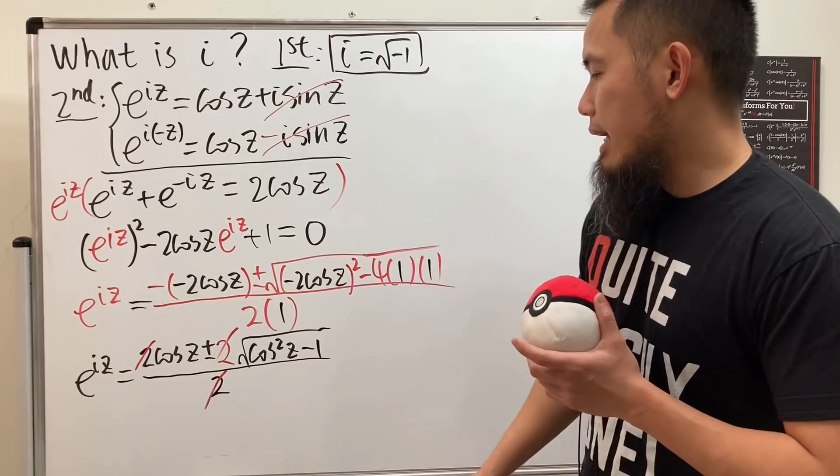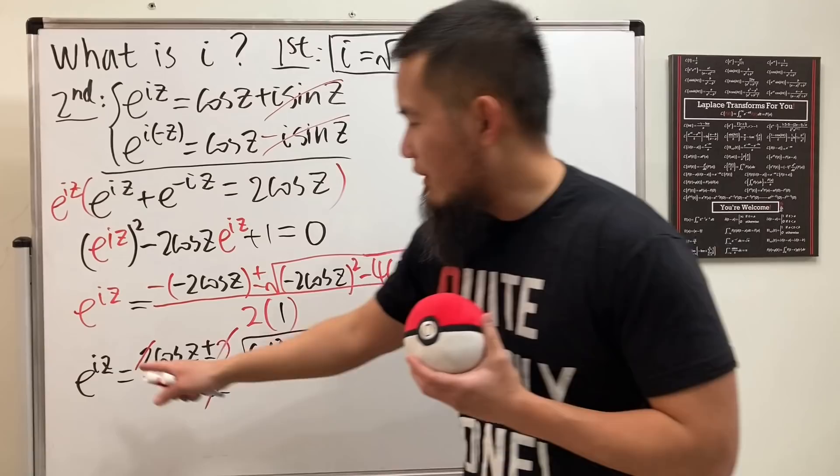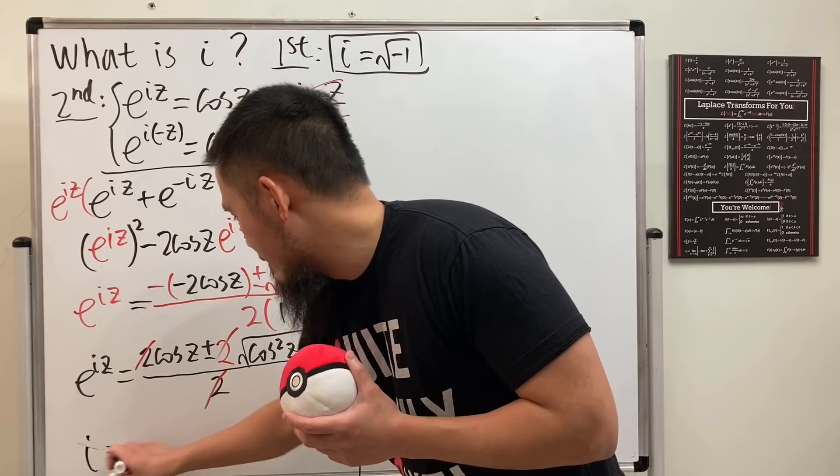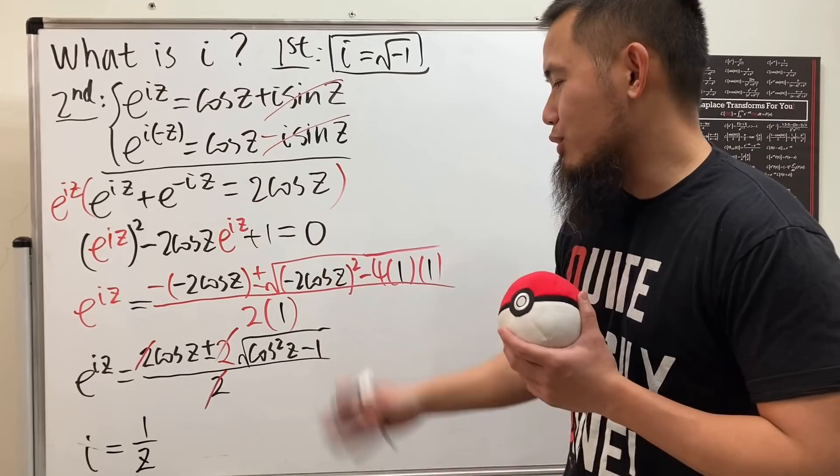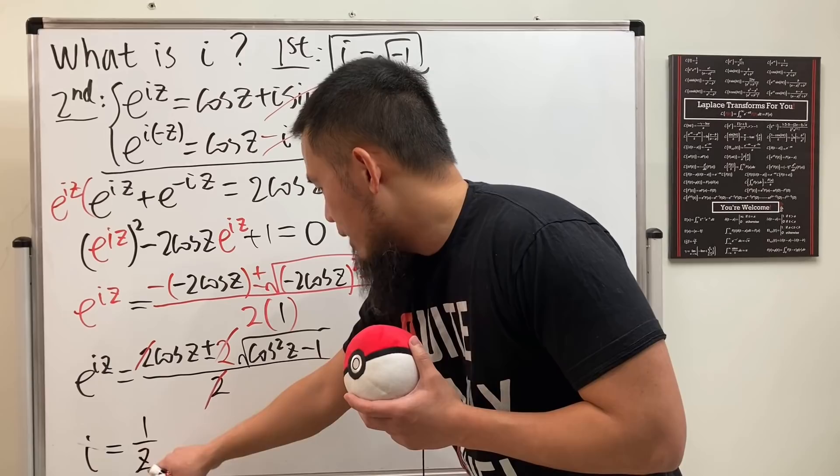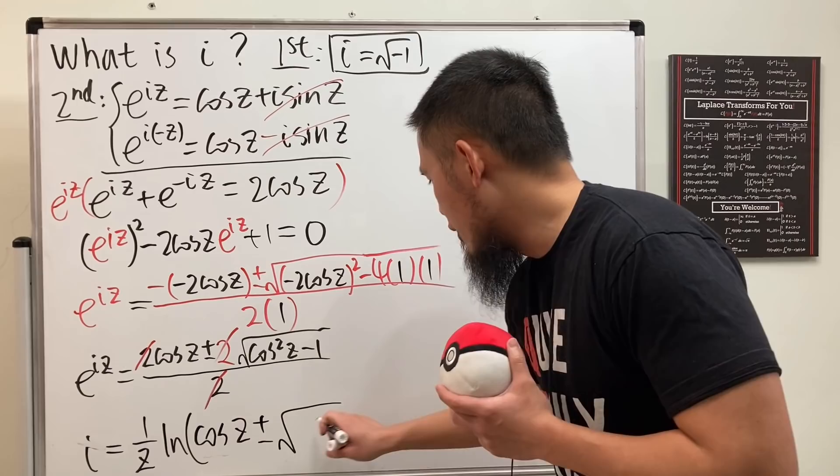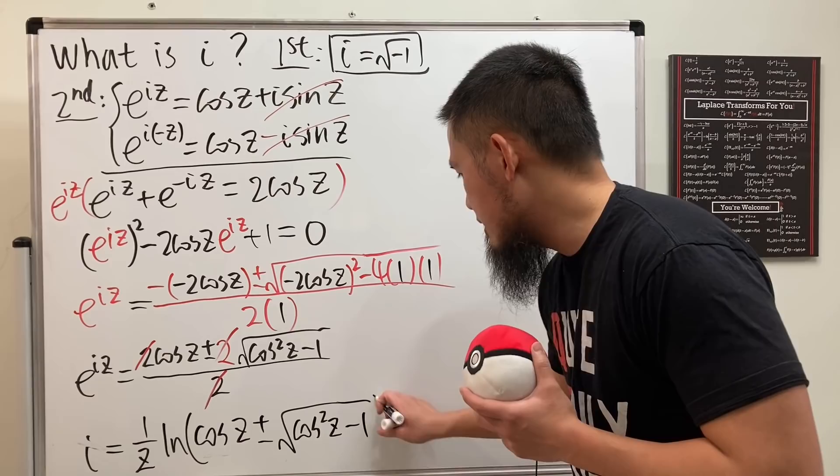Well, of course, we can just cancel the 2s out like so. And then we can just do what? Take the natural log on both sides. And we are going to divide the z on both sides. So what do we get? Ladies and gentlemen, have a look. I is equal to, well, I should say i am equal to 1 over z. Let me just put it down right here. And z can be on the bottom. He likes to be on the bottom anyway. Well, I don't know. I have not talked to him for a while. Anyway, 1 over z and then take the natural log. And then just put everything inside. So here we have cosine z and then plus or minus square root of cosine square z and then minus 1. Everybody inside.